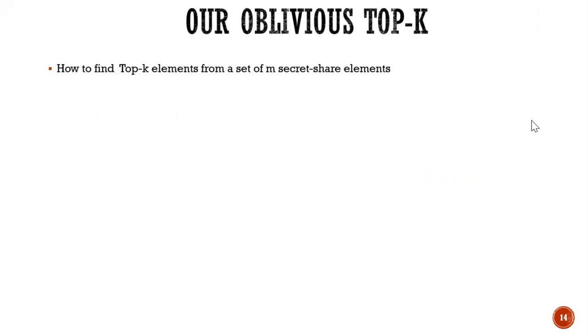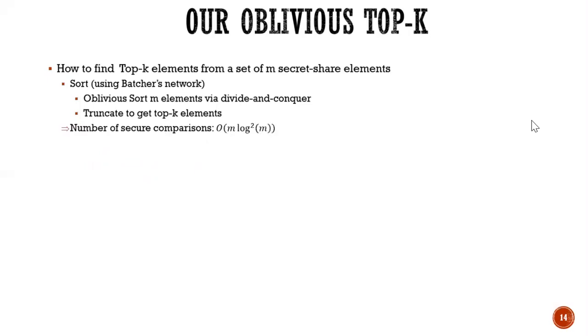So our main question here is how to find a top K element from a set of M secret shared elements. So the first solution is to use oblivious sort. So it means that you can sort M items using divide and conquer. And then return to get a top K item.